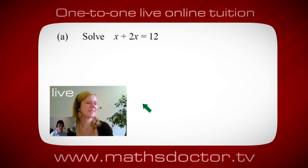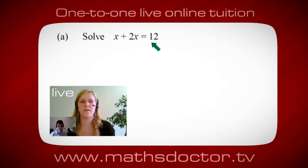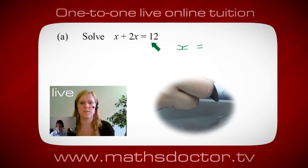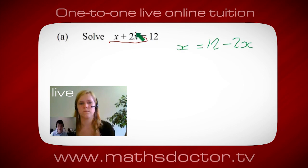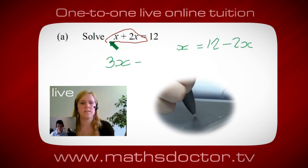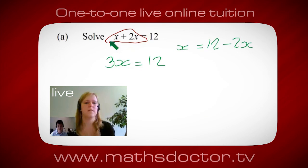Now let's solve x plus 2x equals twelve. Get all the x's together: that gives 3x equals twelve, so x equals four.